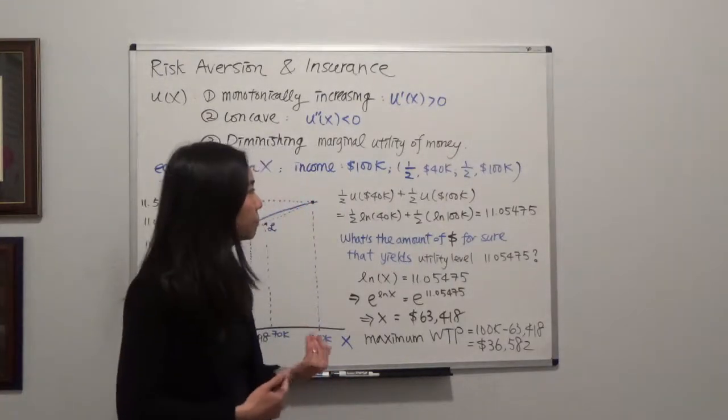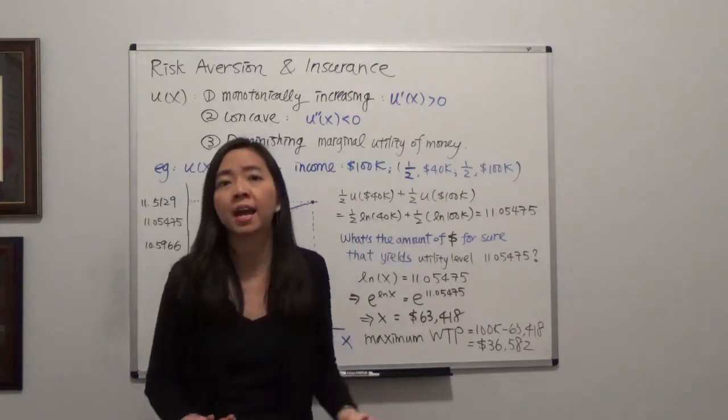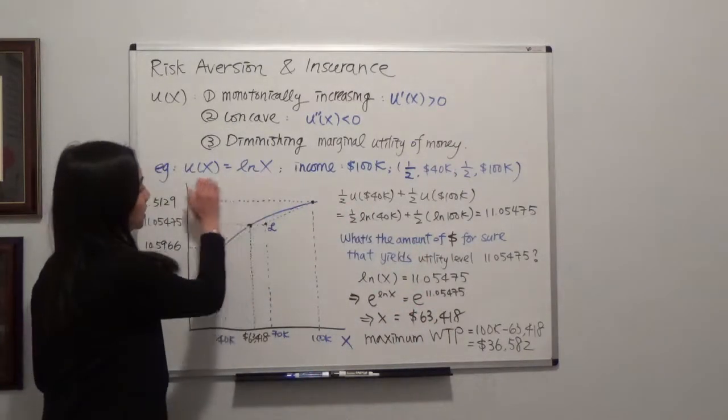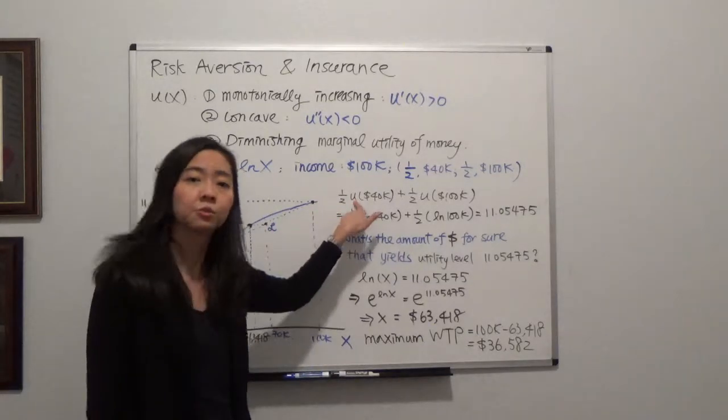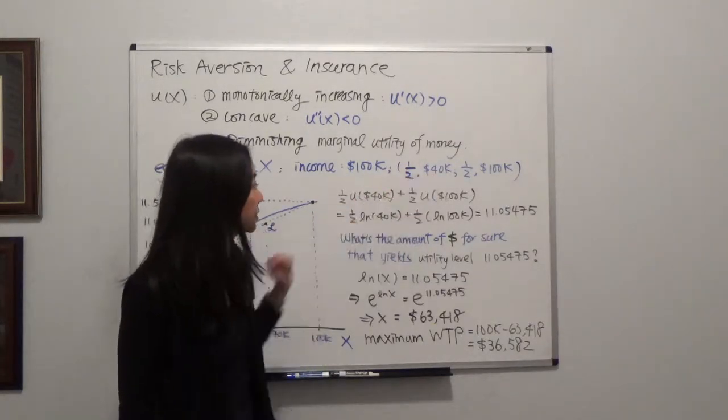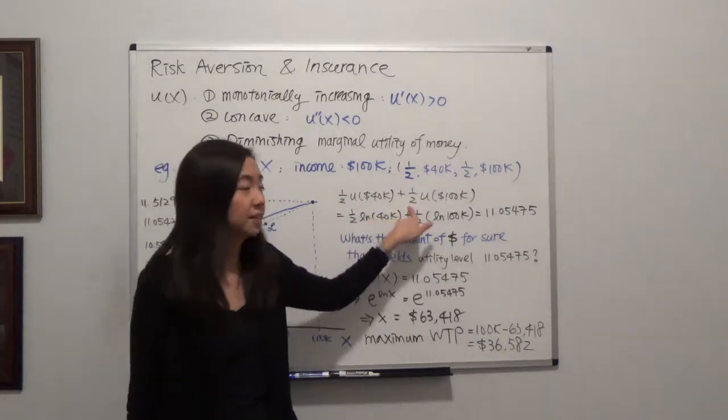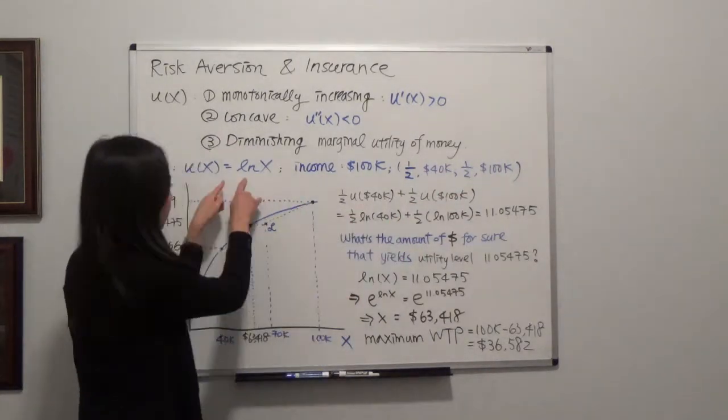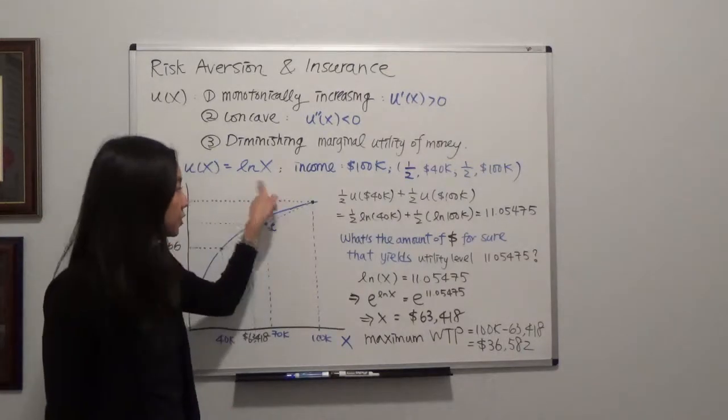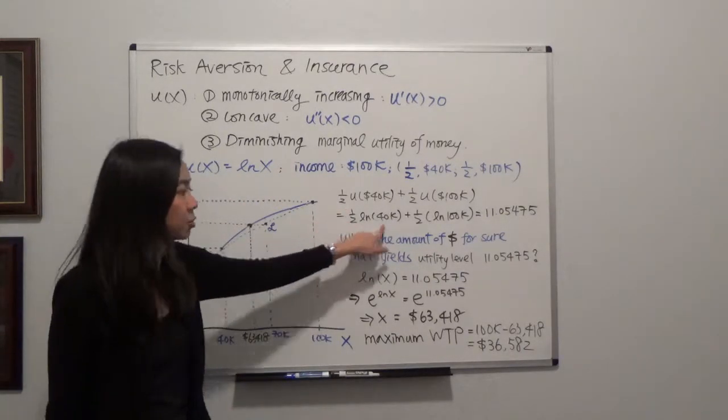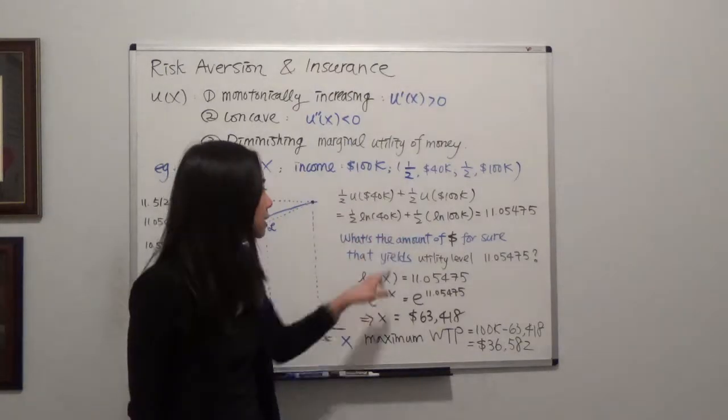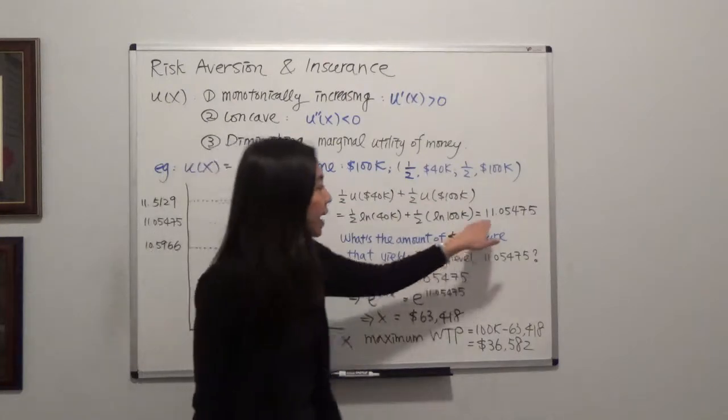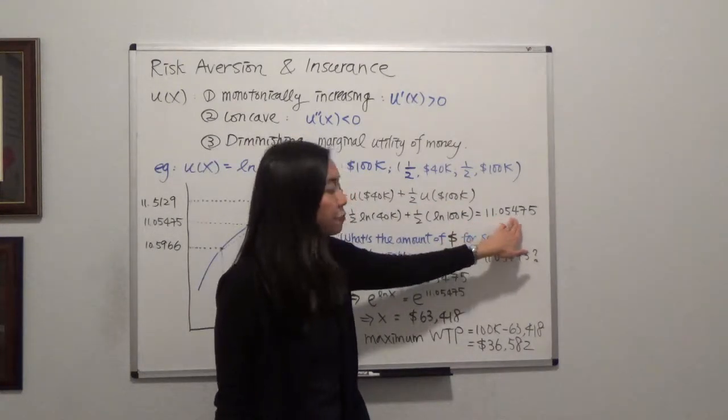So what is the expected utility you get from playing that lottery? We're going to use the expected utility. So that will be a half times the utility of $40,000 plus a half times the utility of $100,000. And we're going to just plug that into our utility function. So that will be a half times the natural log of $40,000 plus a half times the natural log of $100,000. And after you calculate that, that will be 11.05475.